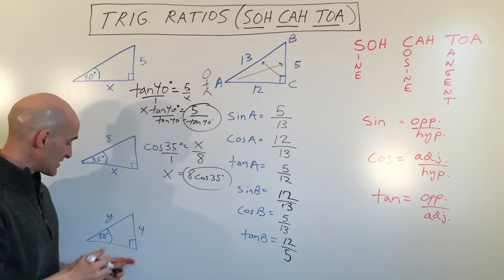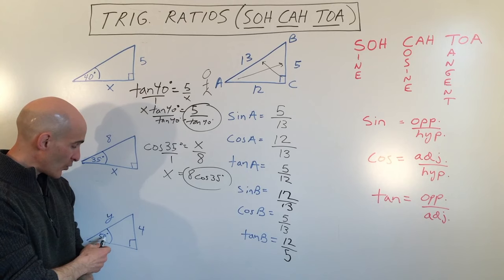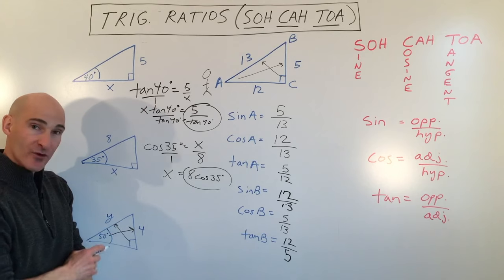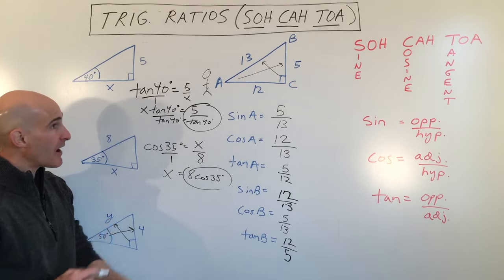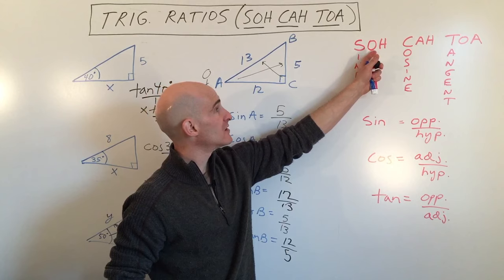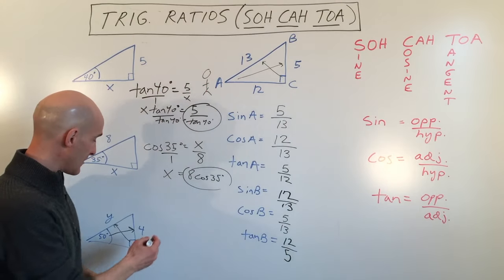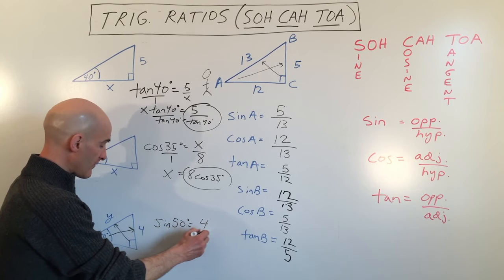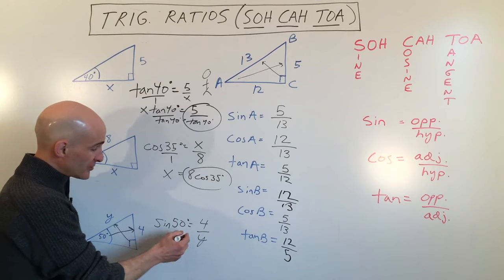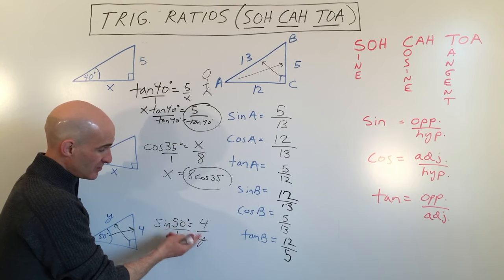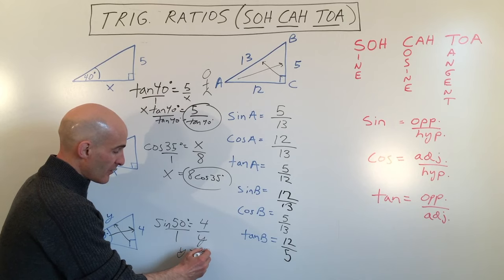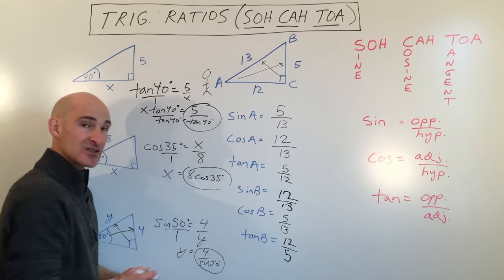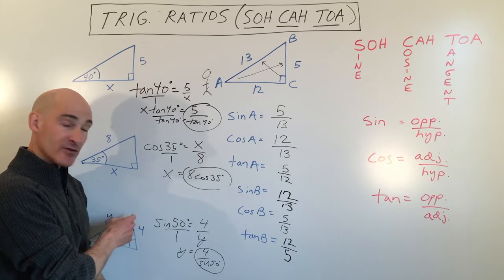In the last example, we have a 50-degree angle. We're tying together the opposite side and the hypotenuse — that's sine (S-O-H). So sine of 50 degrees equals 4 divided by y. Using the diagonal-switching technique: y over 1 equals 4 divided by sine of 50 degrees. That's the exact answer — put it in your calculator for a decimal approximation of the missing side.